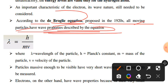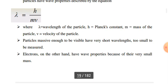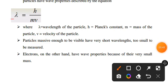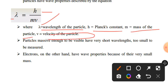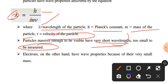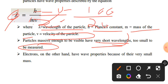The wavelength lambda is equal to Planck's constant h over m times v, where lambda is the wavelength of the particle, h is Planck's constant, m is mass of the particle, and v is velocity of the particle. Particles massive enough to be visible have very short wavelengths, too small to be measured.